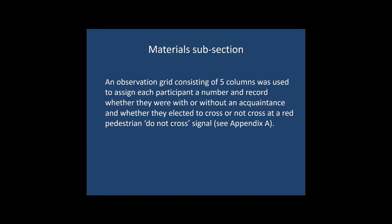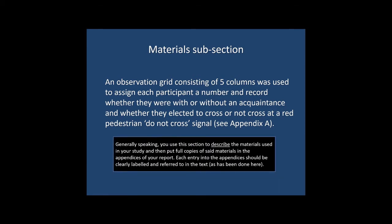In fact, the only thing that really needs to be described here is the observational grid the researcher used in recording whether each participant was alone or with an acquaintance when they crossed the road, and whether they elected to cross or not cross when the red pedestrian 'do not cross' signal was illuminated. As a rule of thumb, if your study involved more extensive materials, use your materials subsection to describe or provide an overview of those materials.